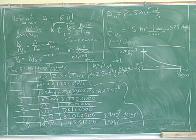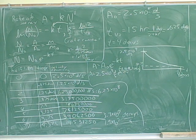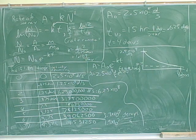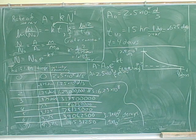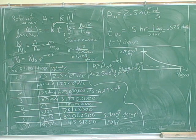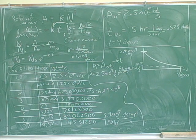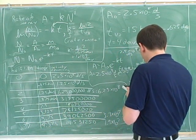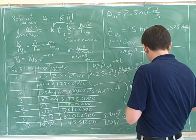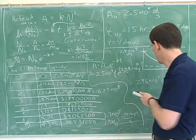So what is the answer to the question? We found the activity. Is the question asking for a fraction or just how much? No, it's asking for the present activity — so this is the answer. The answer is 2.96 times 10 to the 7th decays per second. Oh, that makes a huge difference — 2.96 times 10 to the 7th.